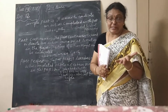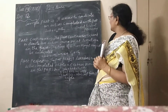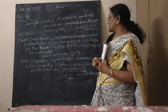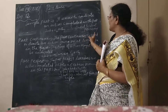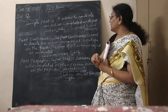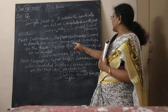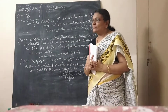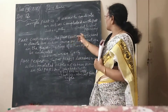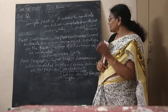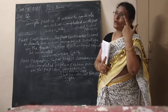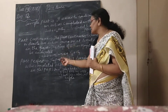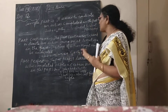What is past continuous tense? The past continuous tense is used to denote an action going on at some time in the past. The time of the action may or may not be indicated. The structure is: Subject + was/were + V4 + Object.